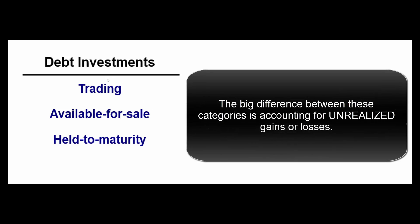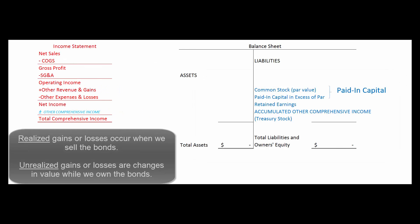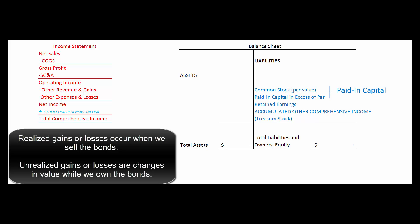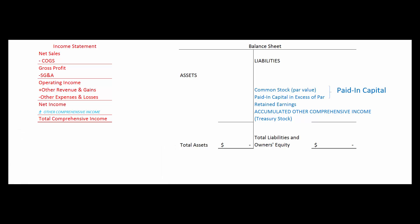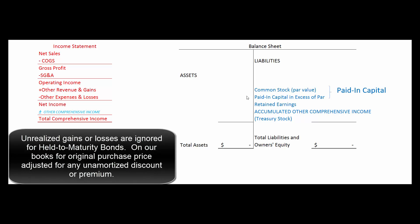How we account for interest income in the meantime is pretty much the same for all these bonds. The trick is what we do with unrealized gains or losses — meaning we haven't sold the bonds yet but they've gone up or down in value. For held to maturity bonds, we're going to ignore that. We told the world we're going to hang on until it matures, so whether it goes up or down in the meantime, we don't care.